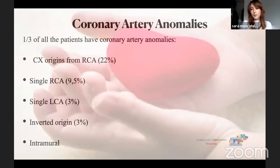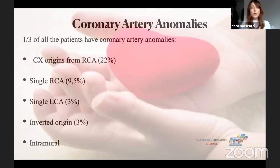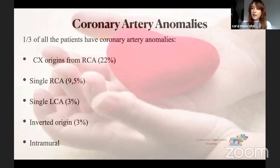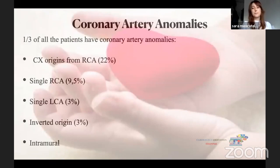An important point to mention: one third of TGA patients have coronary artery anomalies. The most common is the circumflex artery arising from the right coronary. Other variants include a single coronary, a right coronary giving two branches to the left ventricle, a single left coronary giving branches to the right ventricle, or an inverted origin of left and right coronaries. Intramural origin or a single coronary artery is associated with worse patient survival.